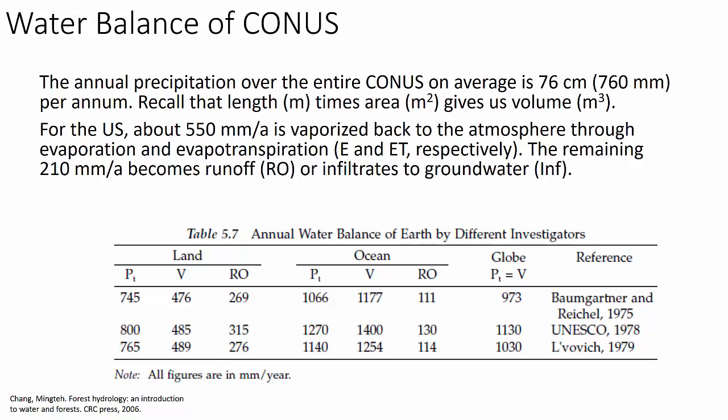For the US, about 550 millimeters — a little over half a meter per year — is vaporized back into the atmosphere through evaporation and evapotranspiration (ET). Evapotranspiration is the water that returns to the atmosphere through living organisms; transpiration is the mechanism by which plants move water from the soil up through their leaves and evaporate it. That process is critical for plant life — it's the pump that moves nutrients from the soil into plant tissues. The remaining 210 millimeters per year becomes runoff or infiltrates to groundwater.